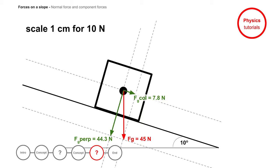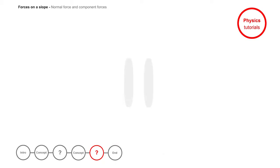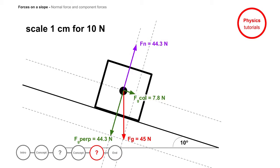Another question. Do you know what the magnitude and direction is of the normal force? Draw this in your notebook. Good job! The direction is upwards, perpendicular to the slope and equal in size as the perpendicular gravity component force: 44.3 newtons.